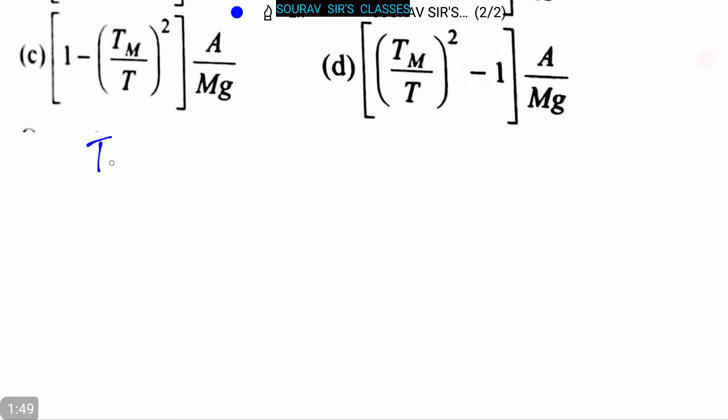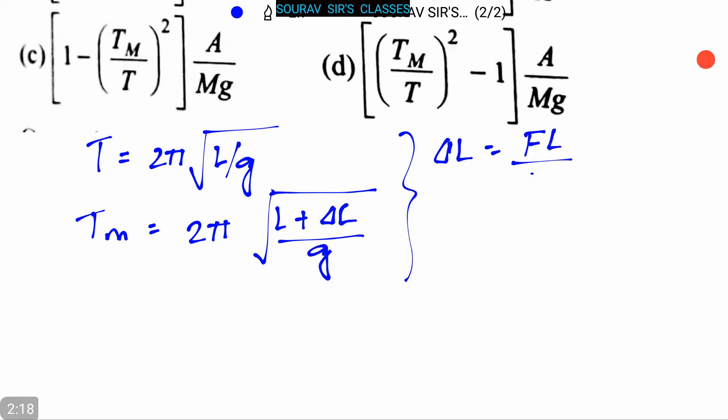Now let's proceed to the solution. We know that T equals 2π root over L by G. So TM equals 2π root over L plus del L divided by G. Here del L equals FL by AY, that is MGL divided by AY.